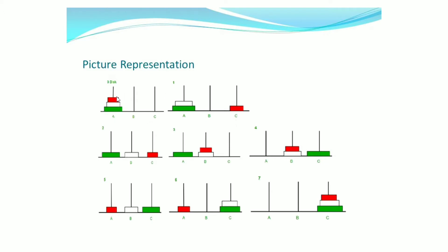In step 1, we are moving the smallest disk from rod A to its destination rod C. In step 2, we are moving the second largest disk from rod A to rod B. We can't move it to rod C because as per the rule, a small disk should be placed above the larger disk. In step 3, we are moving the smallest disk from rod C to rod B.